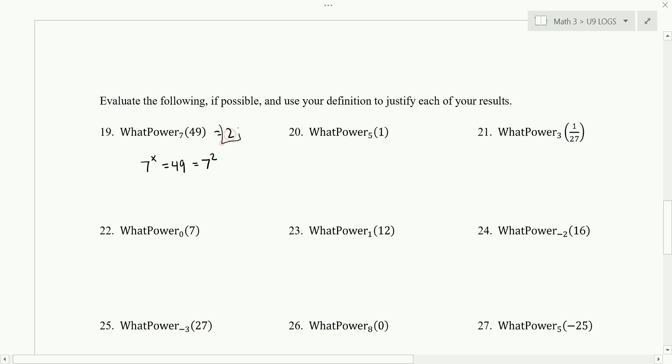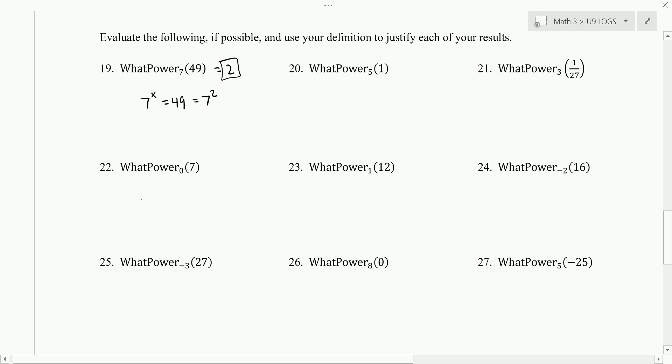Number 22 is asking the question 0 to what power is 7. 0 to any power is 0, not 7. And so there's no solution to this.